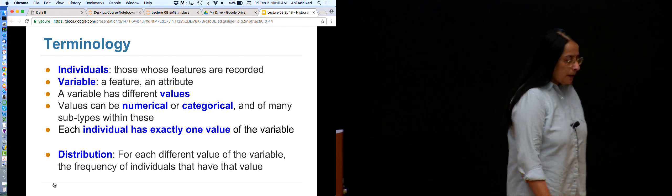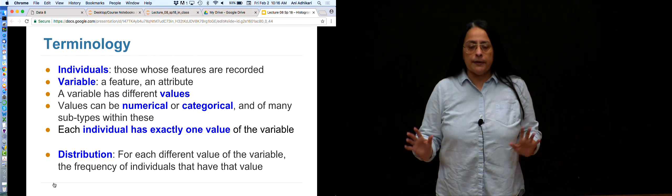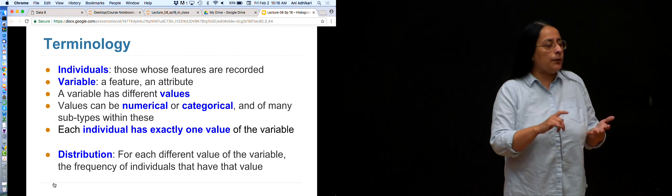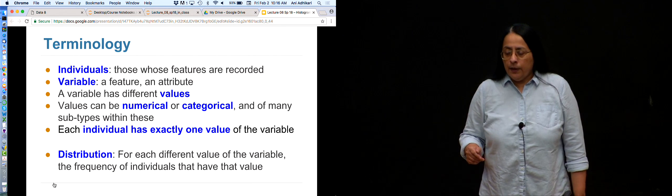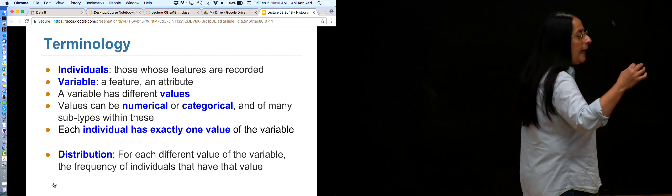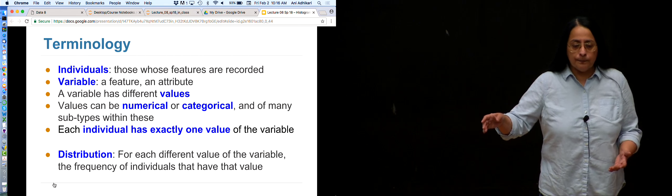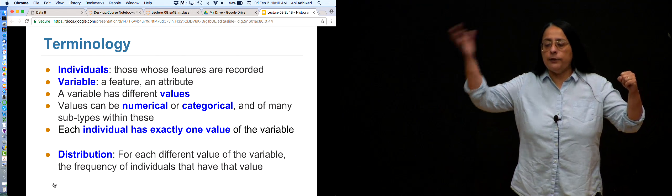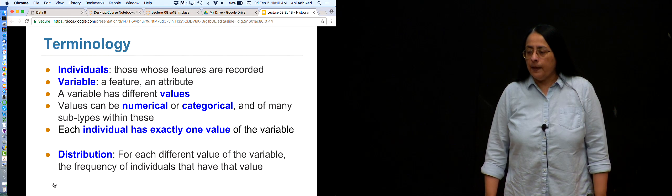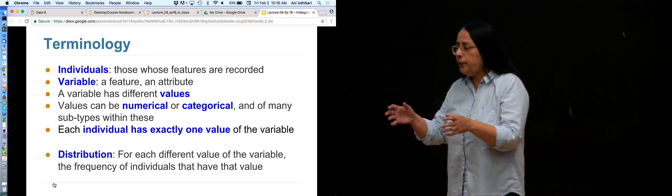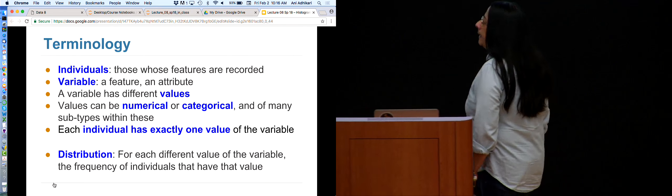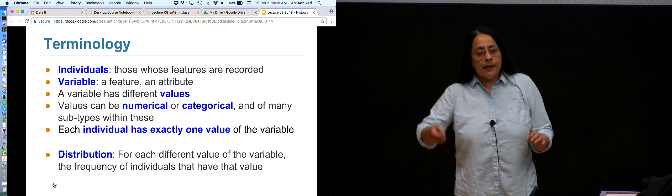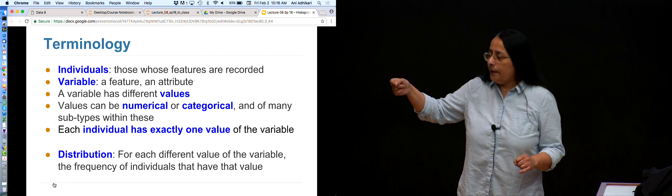What's a distribution? Imagine the individuals are all the students in this class and the variable is their year in school: freshman, sophomore, junior, senior, graduate. A distribution takes each value - like freshman - and counts how many students correspond to that value. How many freshmen, how many sophomores, how many juniors, how many seniors, how many graduate students? It says how the class is distributed over the values of the variable. Each person appears once and only once.